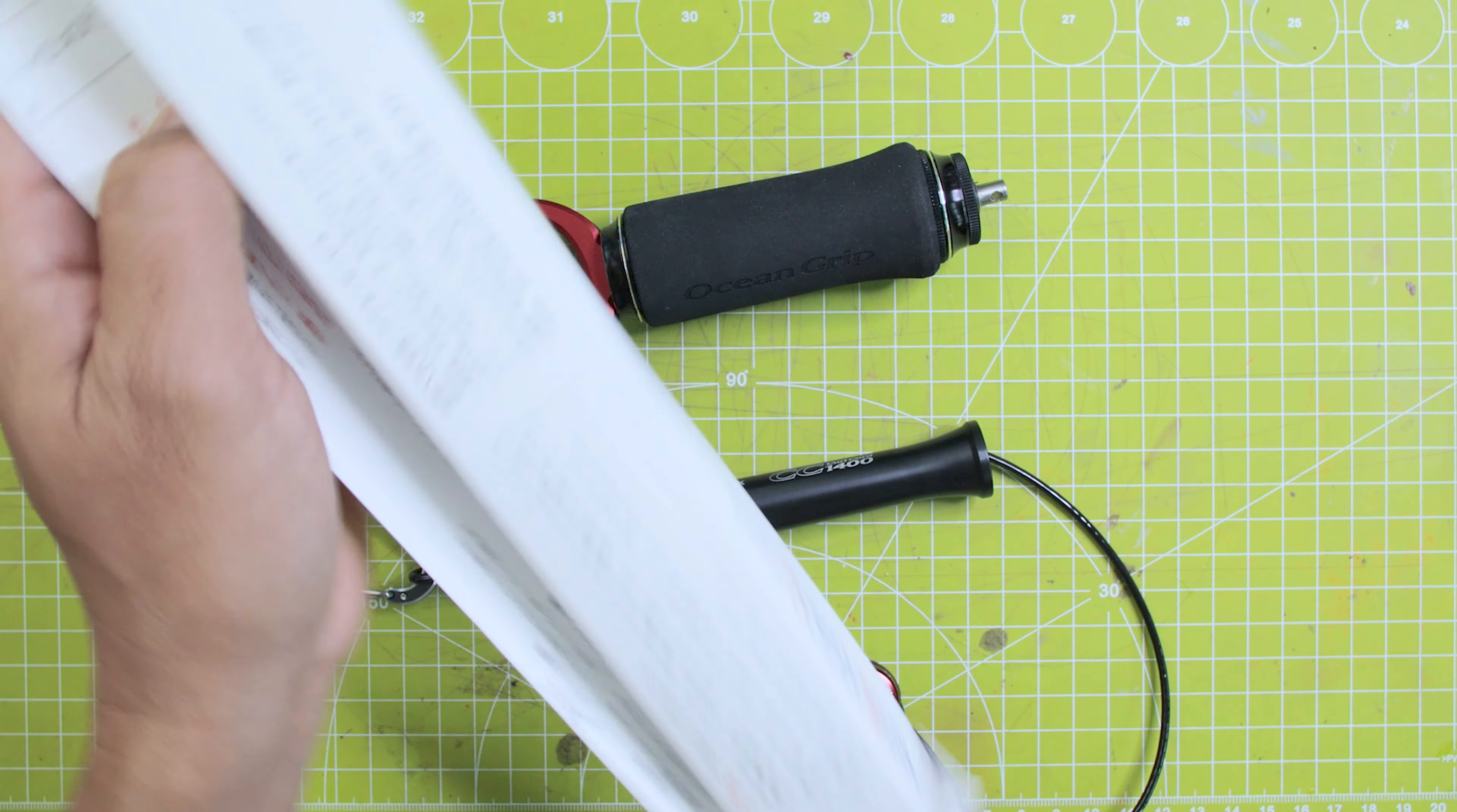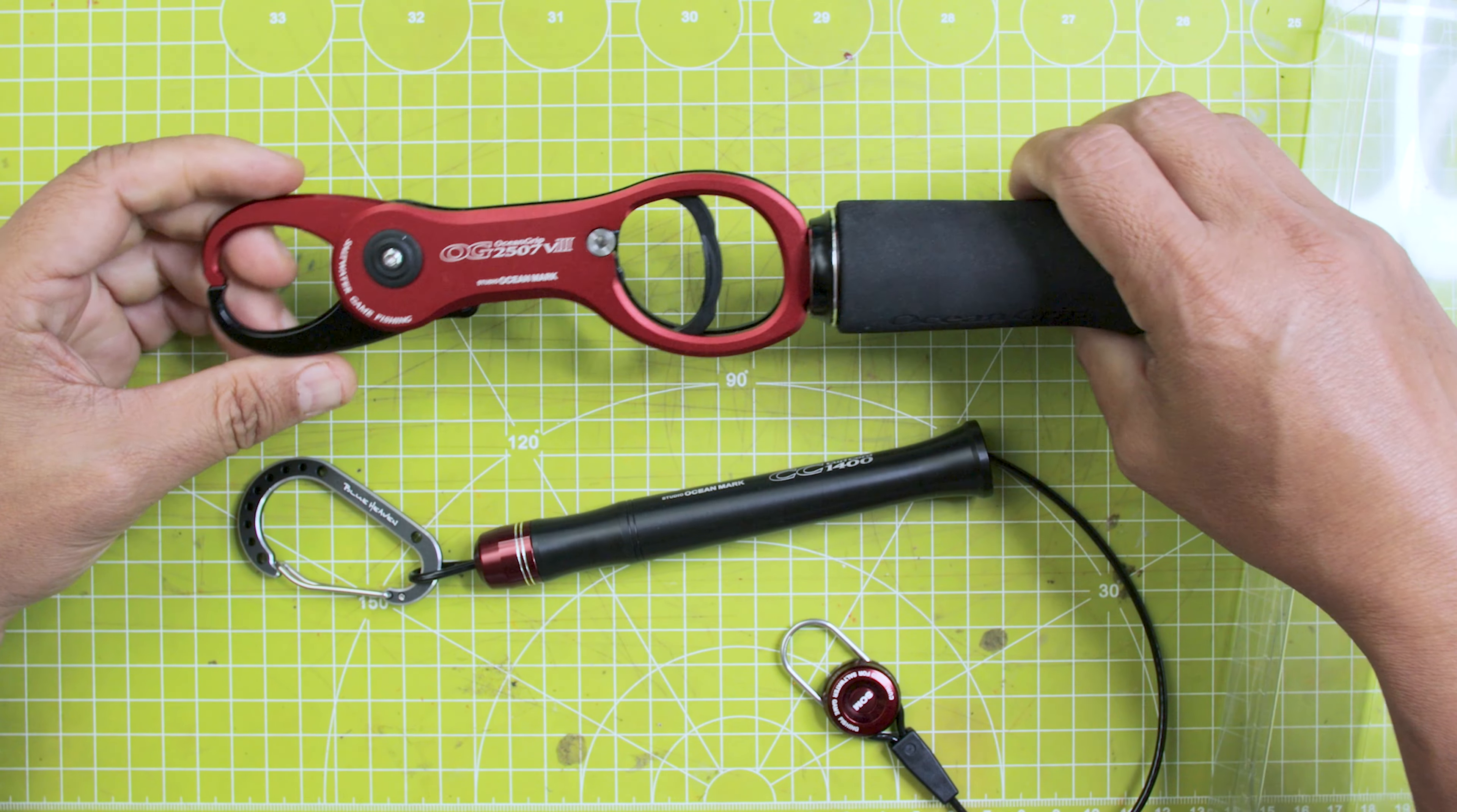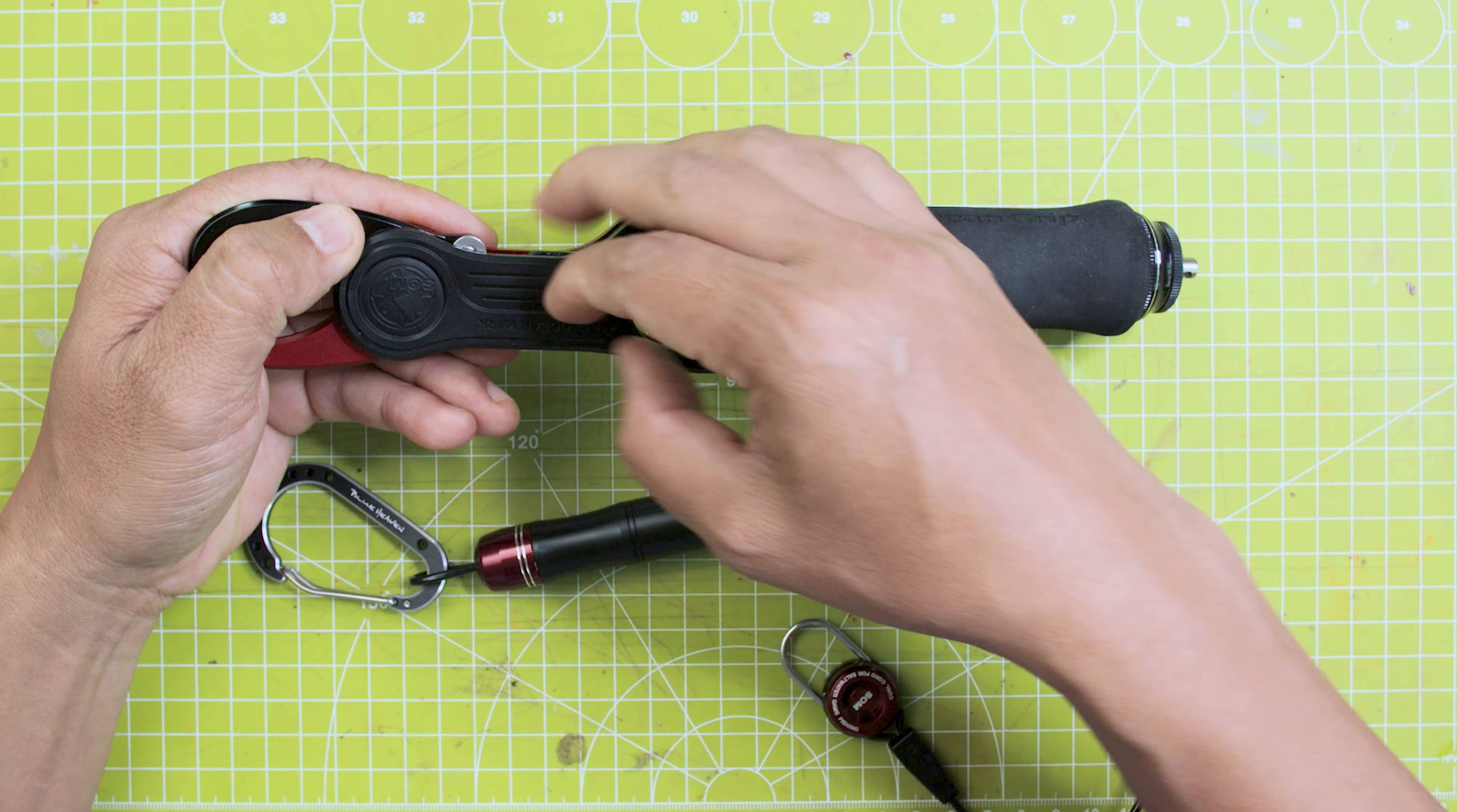There's instructions in Japanese right there. Basically, this one actually has a scale that goes up to 7 kg, so about 14 pounds. One side is aluminum. The other side is composite.